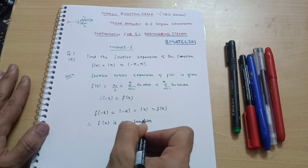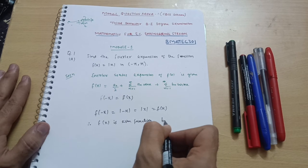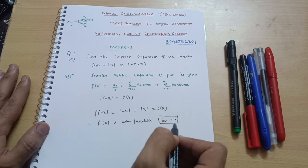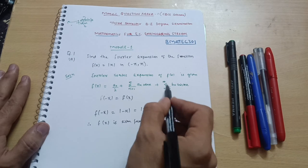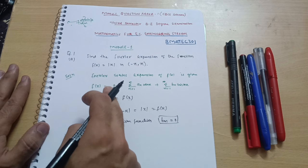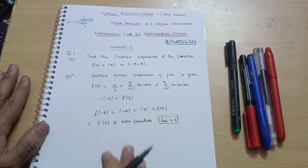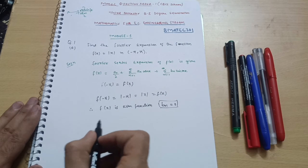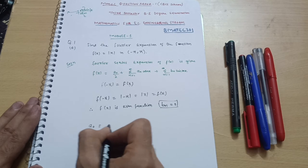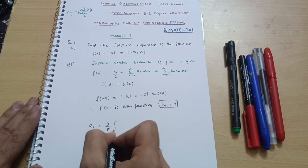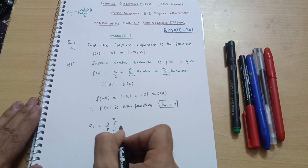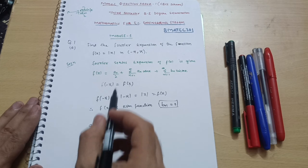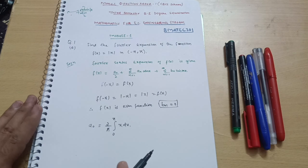For an even function, bₙ is always equal to 0, so there is no need to find that term — it will be eliminated. You only have to calculate a₀/2 and aₙ. The formula for a₀ is: a₀ = (2/π) ∫₀^π x dx. This is the formula for a₀ in this Fourier series expansion.